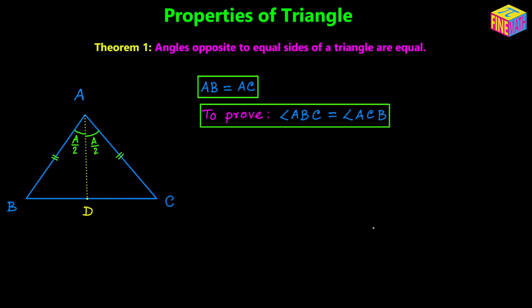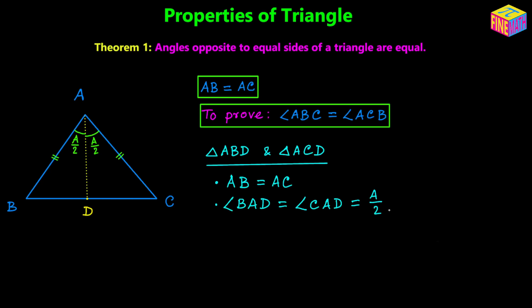Looking at the diagram, you can see that we have two small triangles: triangle ABD and triangle ACD. If we look at those two triangles we find some interesting similarities. First, sides AB and AC are equal — that's the given information. Second, because we drew angle bisector AD, angle BAD and angle CAD are equal, each being half of A. Third, side AD is a common side for both triangles, so AD is equal for both.